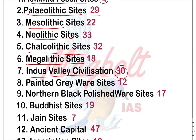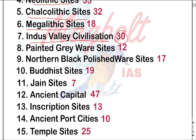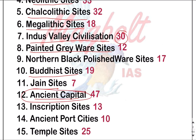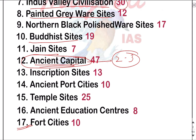Then we have number eight - painted grave ware sites; ninth - Northern Black Polished Ware sites; tenth - Buddhist sites; eleventh - Jain sites; twelfth - ancient capitals, which is very important and always comes in the examinations, with two to three sites asked each year. Then we have inscription sites, ancient port cities, temple sites, ancient education centers, and the last one is fort cities.